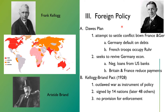United States foreign policy during the 1920s took place with two or three different plans. For instance, the Dawes Plan attempted to settle the conflict between France and Germany. Germany had defaulted on their debts to France, so France, in retaliation, sent troops to occupy the Ruhr — the Rhineland — which was where the biggest part of Germany's industrial complex took place.